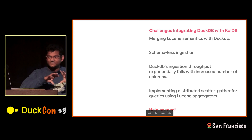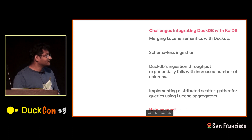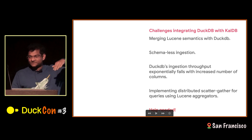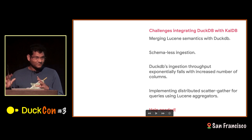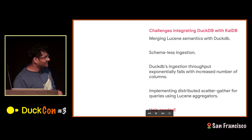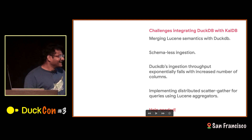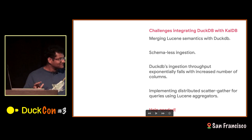Typically, what you do is create a bunch of columns and do an initial layer of mapping. That was the first thing I tried, but apparently that doesn't work because as you have more columns, even with the bulk ingest API, DuckDB's ingestion throughput falls pretty rapidly. I don't know why this is — that's one of the things I wanted to find out this evening. And implementing distributed scatter-gather is also not easy.